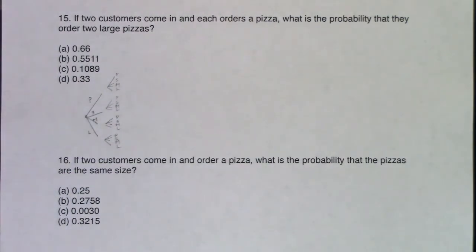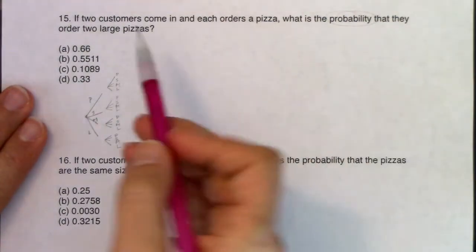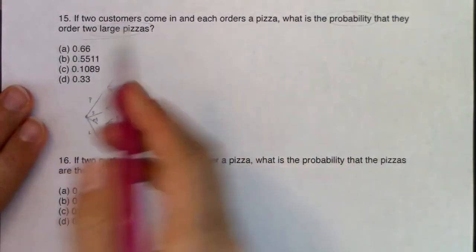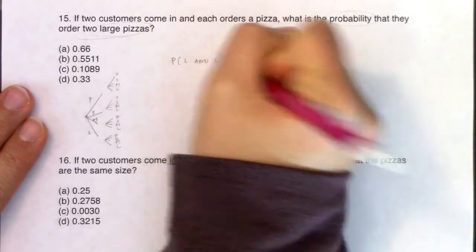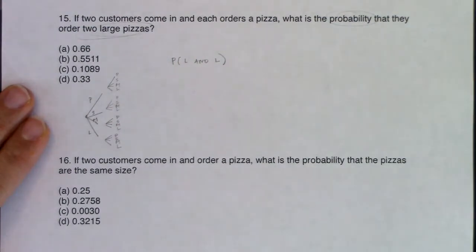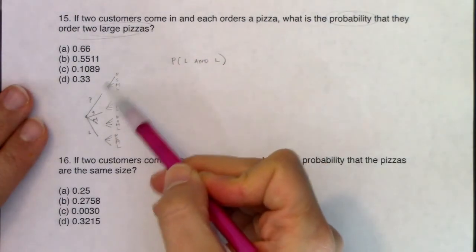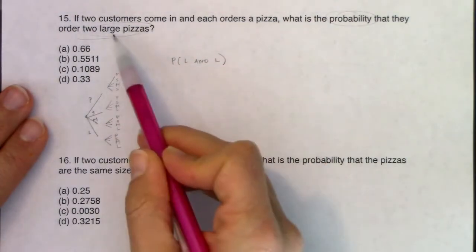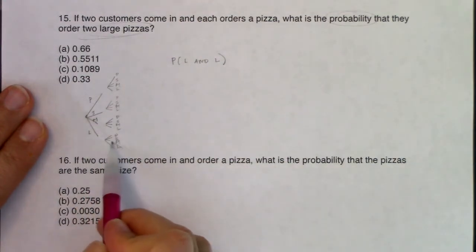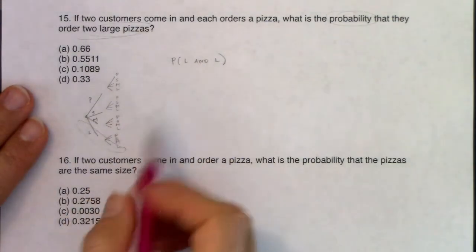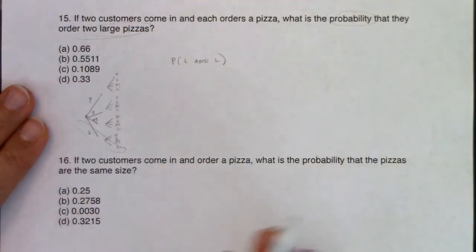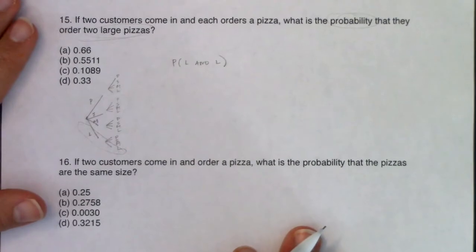You ultimately have 16 branches because you have four options from the first person against four options from the second person. But ultimately, if we look at the question being asked, we've got the probability that they order two large pizzas. So I would like the probability of a large AND a large. Let's go see what branches I want. I don't want personal-personal, personal-small—I don't want any of this. I want large and large, so I want this very bottom branch.